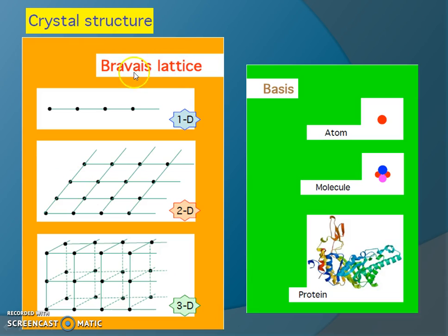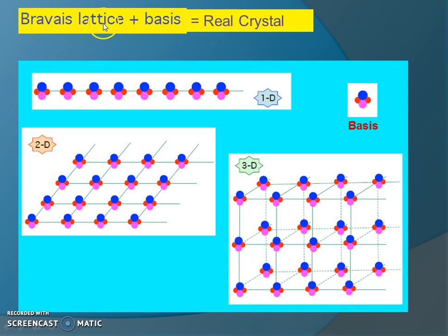In a crystal structure, points distributed in space with a very regular arrangement — where each atom has the same surrounding — form the Bravais lattice. The basis associated with these lattice points may be any atom, any molecule, or anything which can be distributed over the lattice in a very regular, homogeneous pattern. The arrangement of atoms or groups of atoms follows the same pattern as the Bravais lattice, forming the real lattice structure. This may be one-dimensional, two-dimensional, or three-dimensional.